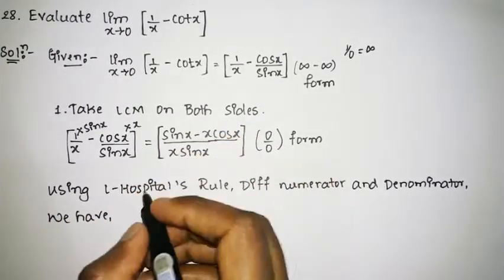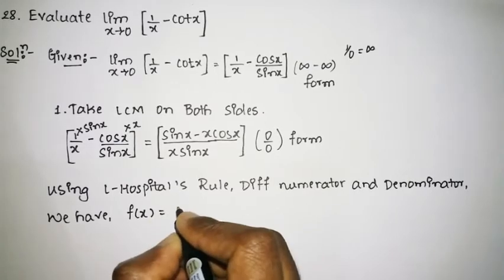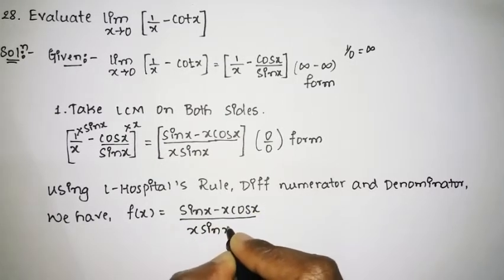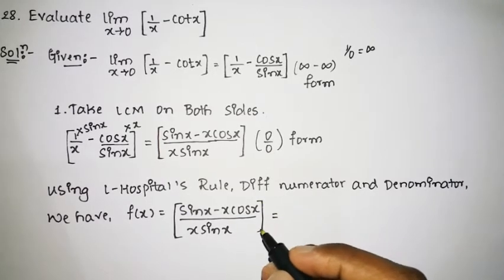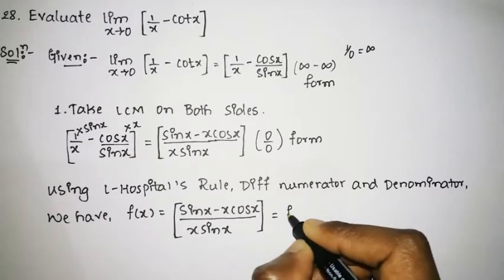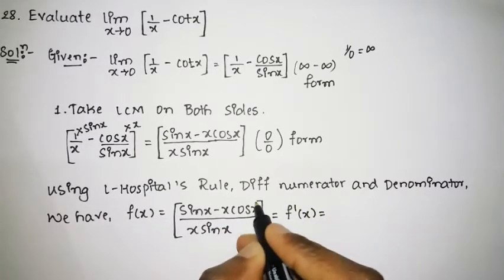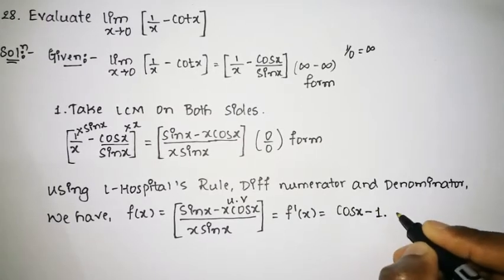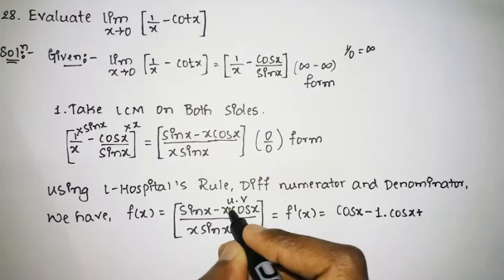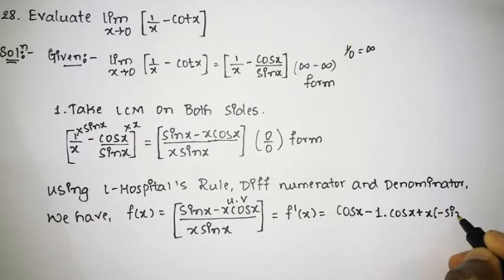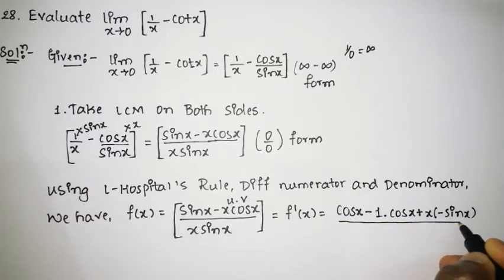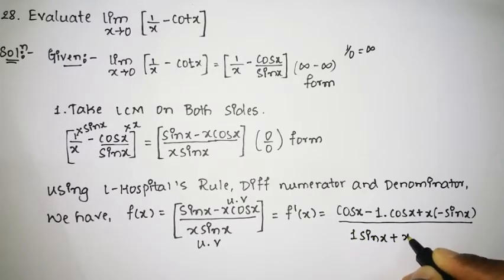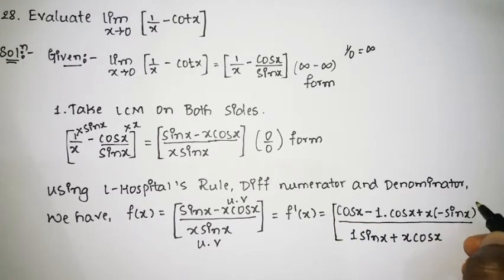We write f(x) equal to sin x minus x·cos x, all divided by x·sin x. Now we differentiate numerator and denominator. Differentiating the numerator: the derivative of sin x is cos x, minus applying the product rule to x·cos x — that gives 1·cos x plus x·(minus sin x). For the denominator, applying the product rule: 1·sin x plus x·cos x.